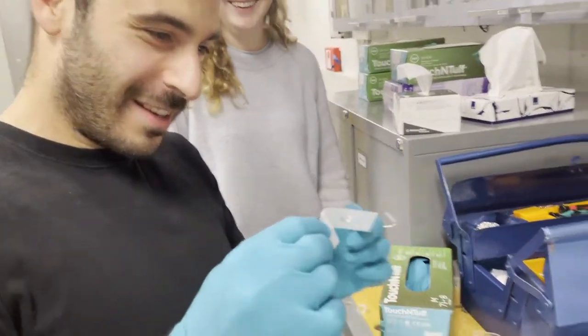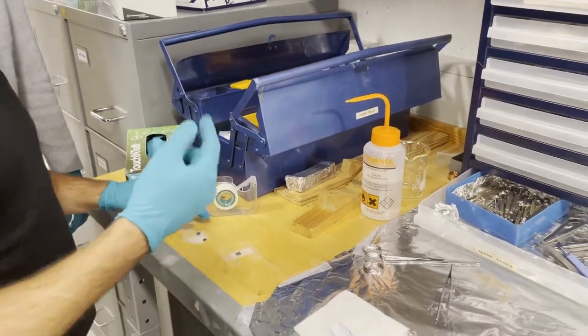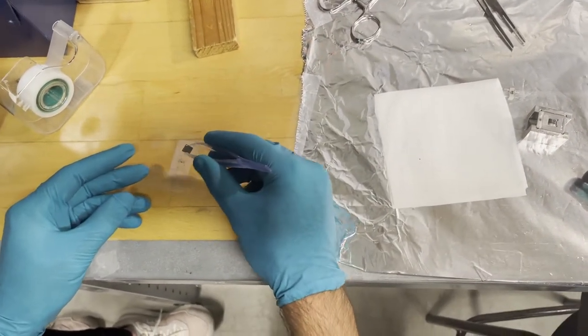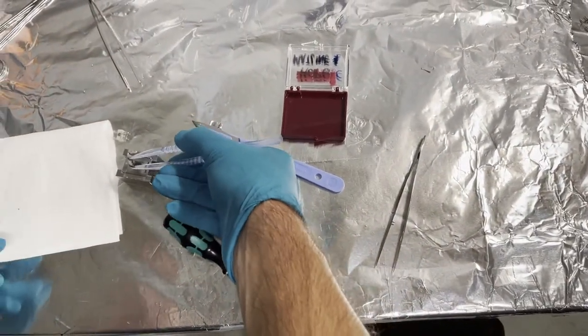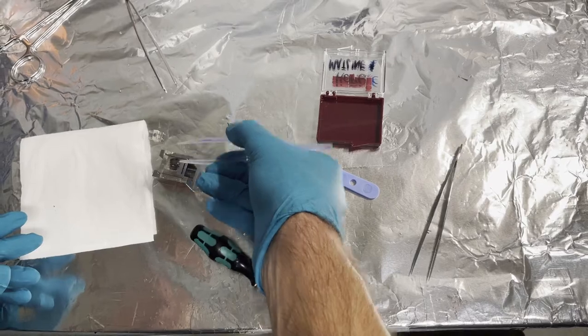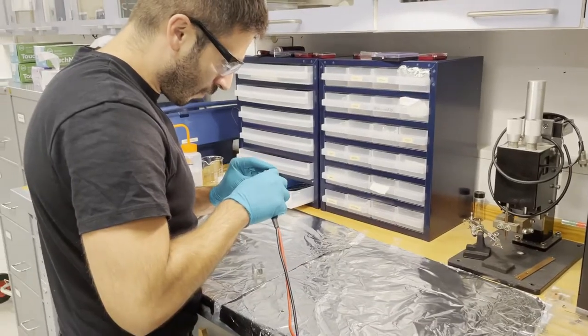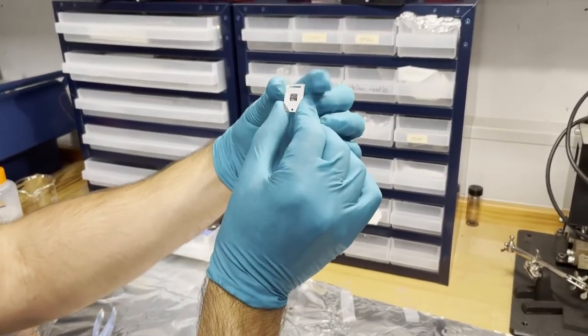Here you can see the removed layers. We now just need to place the graphite back into the sample holder. Secure it. And we have a sample ready to measure.